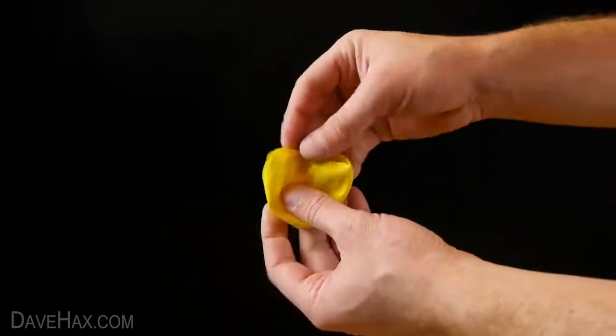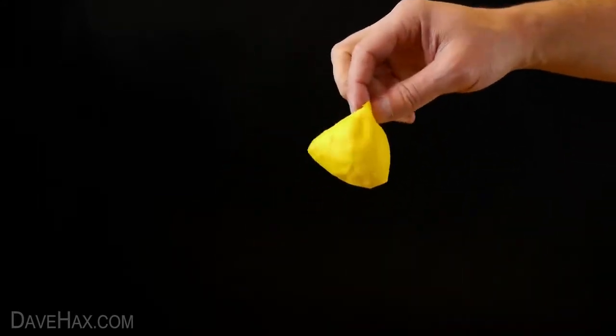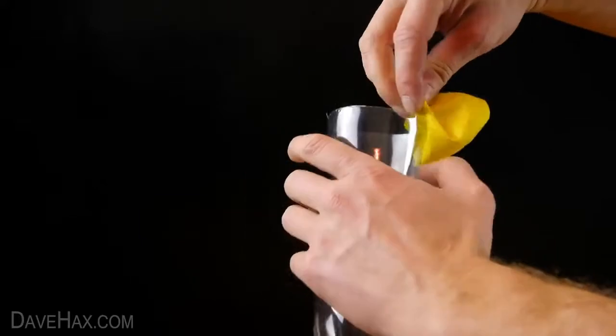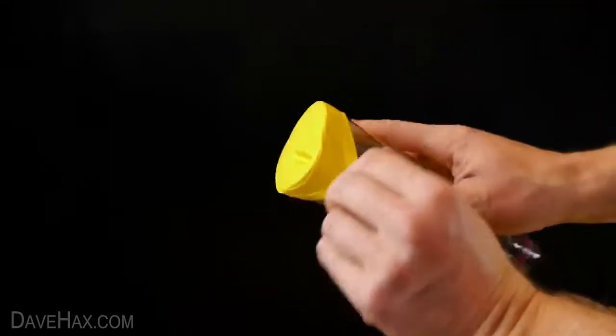Next we're going to take the bottom part of the balloon, open it up and carefully stretch it over the bottom part of the bottle. It should look like this.